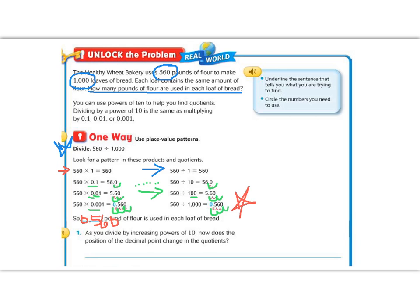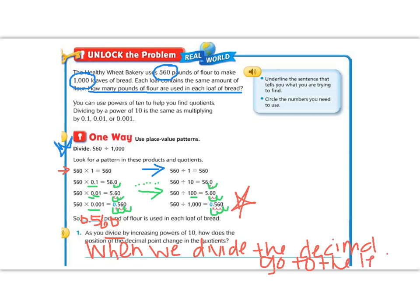Number one says as you divide by increasing powers of 10, so remember we're dividing. How does the position of the decimal change? Well, if we're dividing, then our numbers are going to get smaller. So our decimal is going to move to the left. So when we divide the decimal goes to the left.